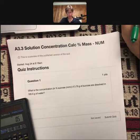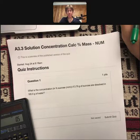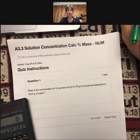The question for this is what is the concentration in percent sucrose mass by mass if 3.79 grams of sucrose are dissolved in 185.6 grams of water.